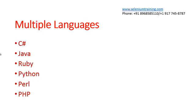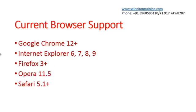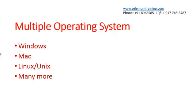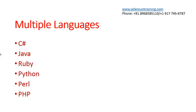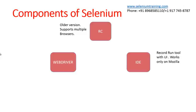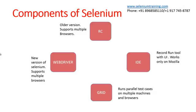So, Selenium supports multiple browsers and multiple operating systems, and it can work with multiple languages as well. Now, coming to the components of Selenium — what are the components and how it actually evolved? Selenium is made up of four components: IDE, RC, WebDriver, and Grid.